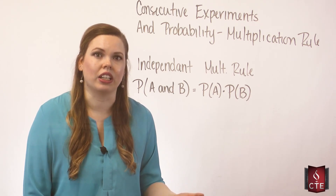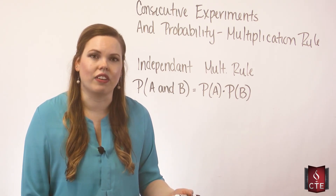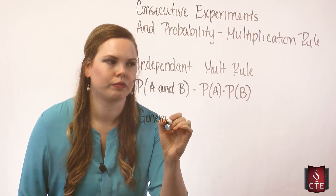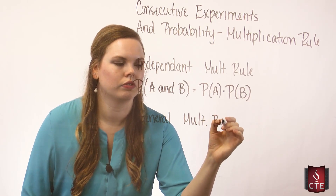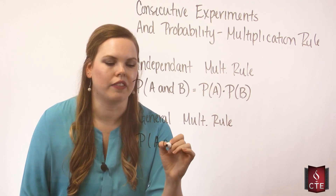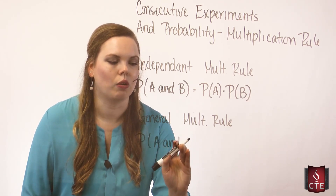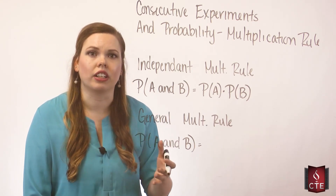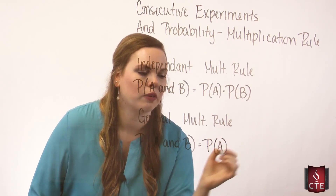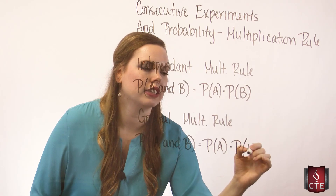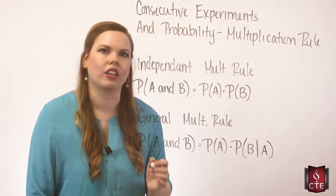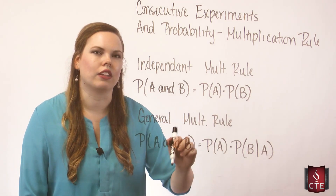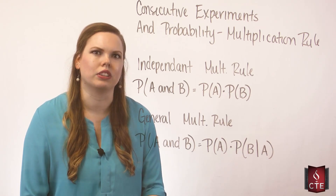But if the two events are not independent - meaning there is an effect on the second event by whatever happens first - then you have to use the general multiplication rule. The probability of A and B, when there is an effect between events, equals the probability of A multiplied by the probability of B given that A did occur. This is called a conditional probability, where we take the probability of the second event assuming the first event did occur.